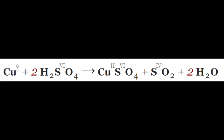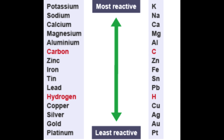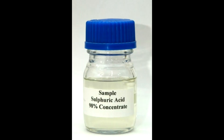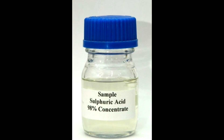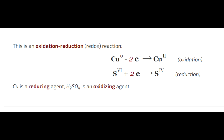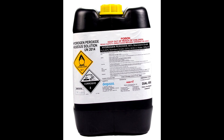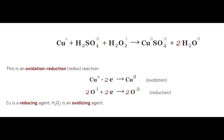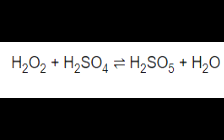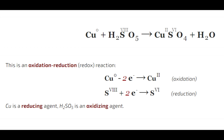The reaction between copper and sulfuric acid is extremely slow due to the position of copper in the reactivity series being lower than hydrogen. If hot concentrated sulfuric acid is used, the reaction progresses more quickly. Hydrogen peroxide is used as an oxidizing agent to oxidize Cu to Cu2+. Presumably, the hydrogen peroxide forms an equilibrium with sulfuric acid to produce peroxomonosulfuric acid and water, which then reacts with copper to form copper sulfate and water.